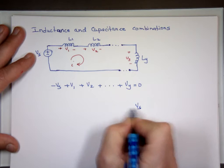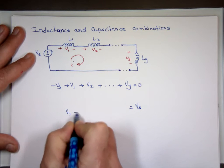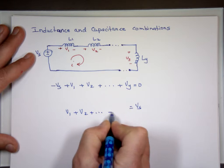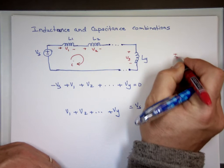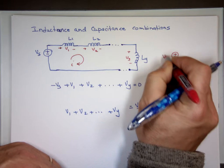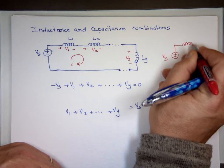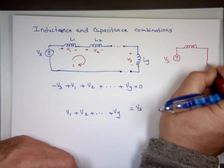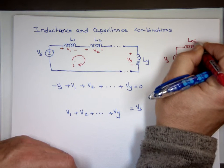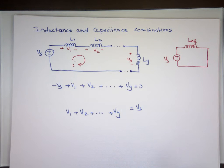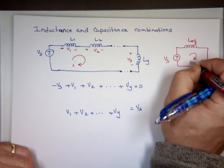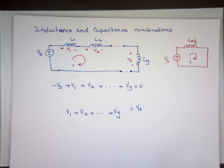Or VS equals V1 plus V2 plus dot dot dot. Now keep in mind, I'm trying to find one inductor here — we'll call it L equivalent. This is VS. What value can I use — just one inductor — that will give me the same result as all of these put together? That will give me the same current going through this, the same voltage. So what is the value of that?